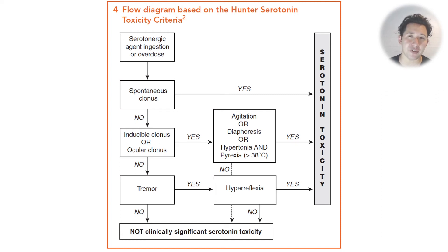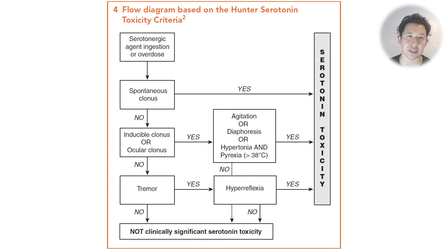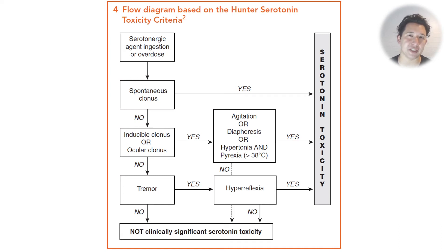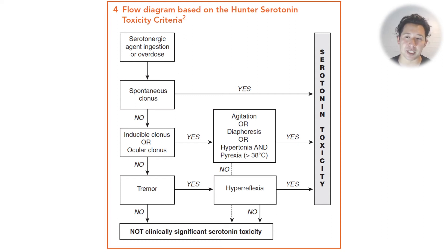Under the Hunter criteria, after ingestion of a serotonergic agent or overdose, if you have spontaneous clonus you have serotonin toxicity. Or if you don't have spontaneous clonus but do have inducible clonus at the ankles, and also have agitation, diaphoresis, hypertonia, or pyrexia, then you have serotonin toxicity. Alternatively, if you have a tremor and hyperreflexia after a serotonergic agent overdose — even without clonus — you can be diagnosed with serotonin toxicity.